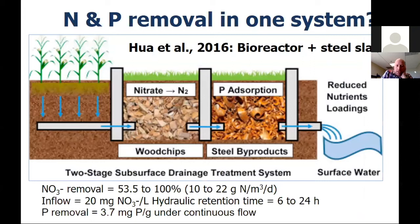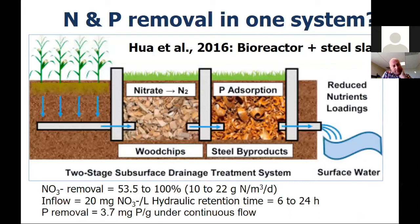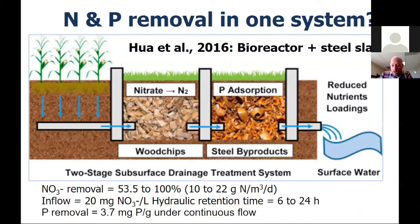Could we design a system that removes both nitrogen and phosphorus from tile drainage water in one system? A study looked at combining wood chips and steel slag at the bench scale in the laboratory and found really encouraging results. For nitrate removal, they found anywhere from 53 to 100% nitrate removal depending on retention time, at an inflow of 20 mg/L nitrate and retention times of 6 to 24 hours. They also found fairly good phosphorus removal in the steel slag — under continuous flow, removal of 3.7 milligrams of phosphorus per gram of material.